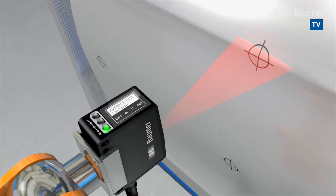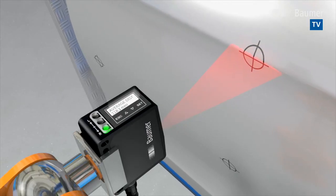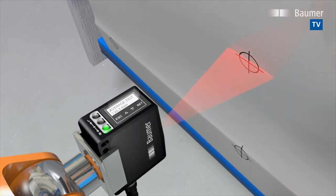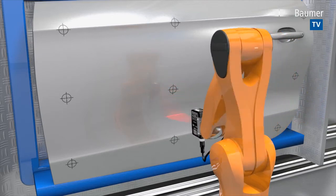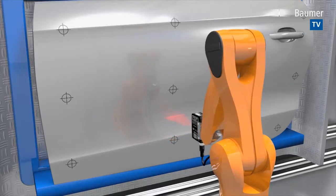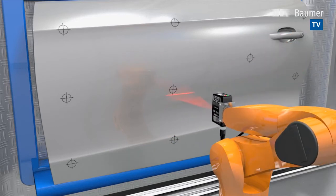By nature, a glossy surface provides the photoelectric sensor only with an insufficient number of measured values. MultiSpot technology with more than 600 measured values ensures solid distance information and reliable results even on glossy parts.